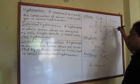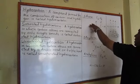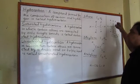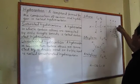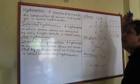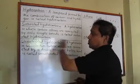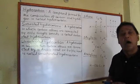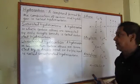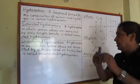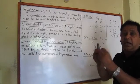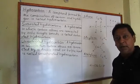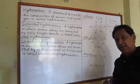This is another hydrocarbon which is a saturated hydrocarbon because carbon atoms are connected by means of single bond. Ethane is one saturated hydrocarbon, and this is called propane, which is also a saturated hydrocarbon. Now let's talk about unsaturated hydrocarbon: a hydrocarbon in which two carbon atoms are connected by means of a double bond or triple bond is called an unsaturated hydrocarbon.